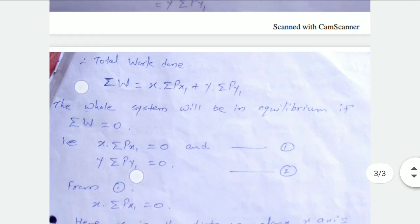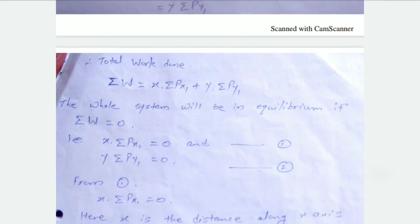So the total virtual work done is: ΣW = δx·(ΣPx) + δy·(ΣPy). The whole system will be in equilibrium only if ΣW equals zero, as stated in the principle of virtual work — if the system is in equilibrium, then ΣW = 0.